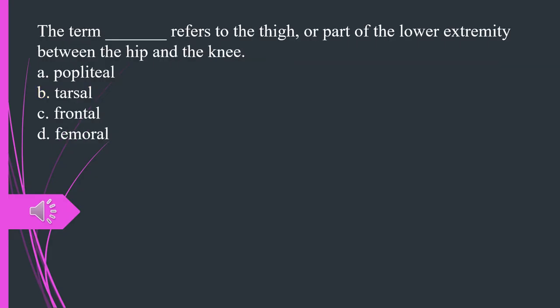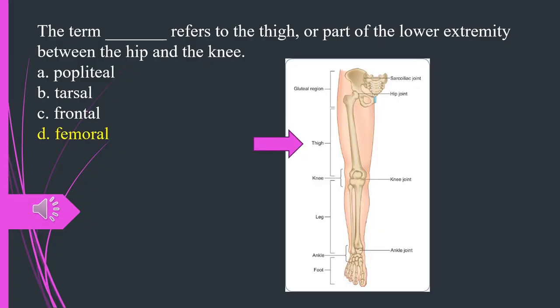The term that refers to the thigh or part of the lower extremity between the hip and the knee is? A. Popliteal. B. Tarsal. C. Frontal. D. Femoral. The answer is D. Femoral.